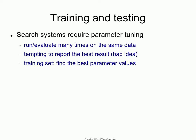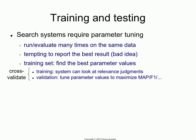What you usually do is a standard machine learning style split, where you have a training set used to find the values of parameters for your system. The training set is further split into a training portion, where your system can look at relevance judgments, and a validation portion, which is for tuning metaparameter values — adjusting the constants in your algorithms and tuning MAP, F1, and things like that.